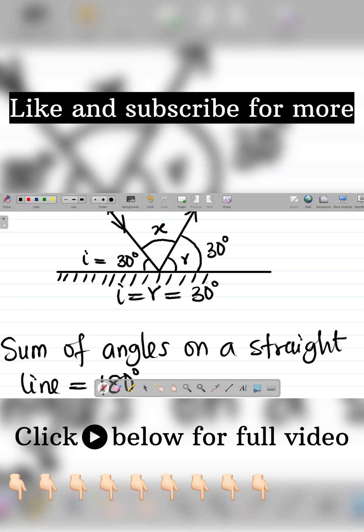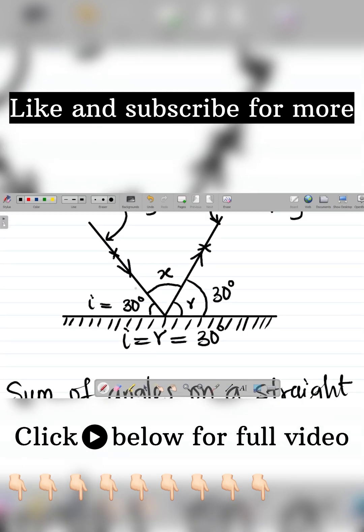So what angles do we have on this line? We have three angles. The first one is i, which is the angle of incidence taken as 30 degrees. The second angle is x, and then the third angle is this one here.